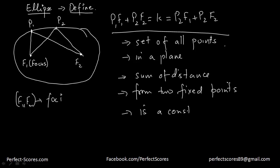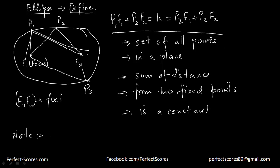So that is the definition of an ellipse — no matter which point you pick up, the sum of distances of that point from F1 and F2 is going to equal the sum of distances from any other point to F1 and F2. The sum of distances is a constant. Another important thing to note: this constant is always going to be greater than the distance between F1 and F2.